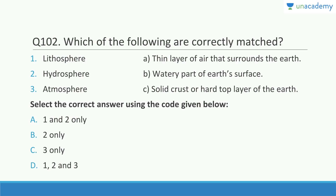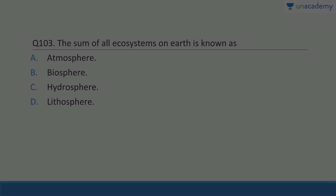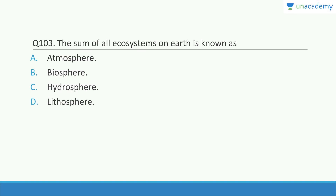Which of the following are correctly matched? Lithosphere is basically the solid crust or hard top layer of the earth. Hydrosphere is the watery part of our surface. Atmosphere is the thin layer of air that surrounds the earth. The answer is B — two only — because the first and third are reversed.